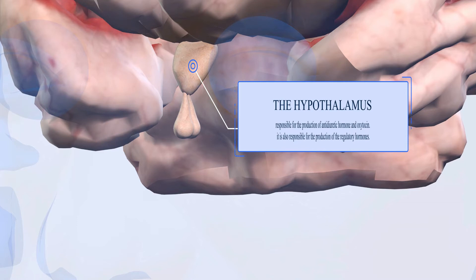The first is situated in the brain here. This is known as the hypothalamus and this is an endocrine tissue. The hypothalamus is responsible for the production of antidiuretic hormone and oxytocin.